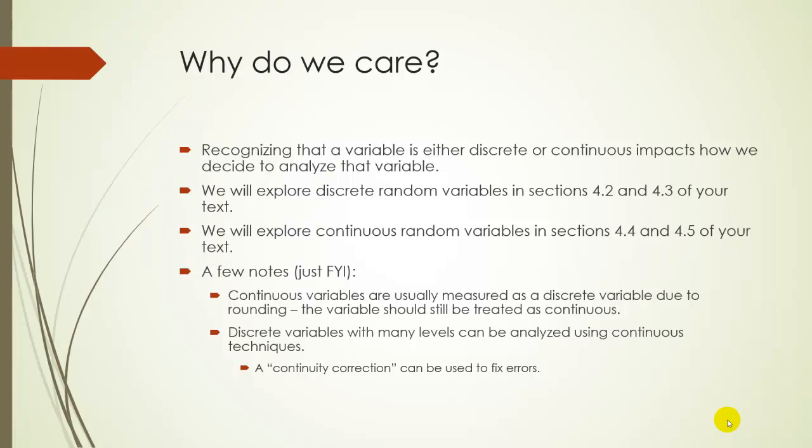Also, discrete variables that have a lot of levels to it, like test scores, that could be any integer between 0 and 100. Since it has so many levels, you can treat it like it's continuous, and that's okay. Technically, it's discrete, but treating it like it's continuous won't really hurt anything. There is something called a continuity correction that can fix these errors that are resulting from treating a discrete variable like it's continuous. There is a section in your book that talks about this briefly, but we won't cover it in this course. But if you're really curious, you can always look up a continuity correction to fix these errors that pop up, but these errors are small. We're talking about like a fraction of a percent. It's not going to make much of a difference.